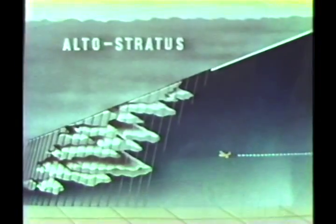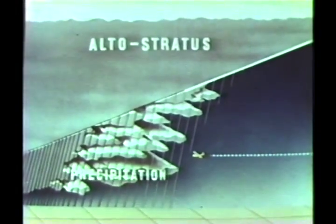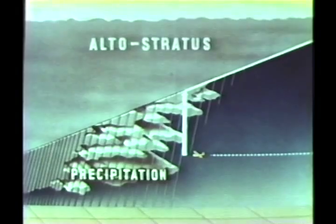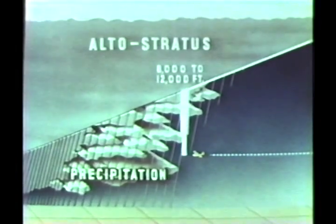As you approach closer to the front, you will observe a lower deck of clouds of the altostratus type. At first, the disk of the sun or the moon will be visible through the thin leading edge of this deck. They will soon be obscured, however, as the altostratus becomes thicker and the base lower. You will encounter precipitation when you reach a point where the base of the altostratus is some 8,000 to 12,000 feet above the surface of the earth.